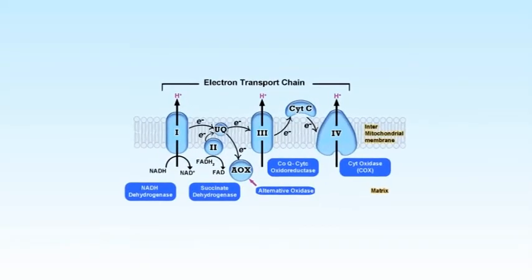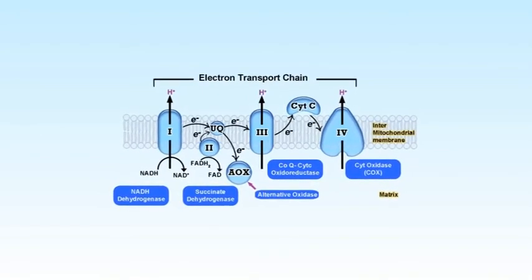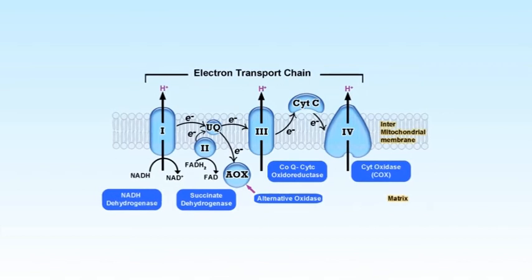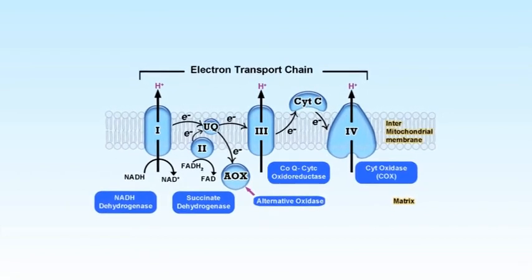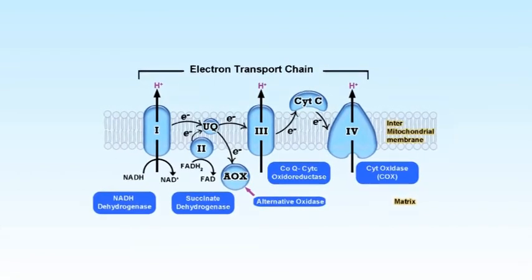Glycolysis, the oxidative pentose phosphate pathway, and the mitochondrial tricarboxylic acid cycle are the central respiratory pathways. These pathways use carbohydrates derived from photosynthesis to supply carbon intermediates for biosynthesis and also couple carbon oxidation with the reduction of NAD+ to NADH. These reducing equivalents are then used to support biosynthetic reactions or can be oxidized by the mitochondrial electron transport chain, which is localized in the inner mitochondrial membrane.